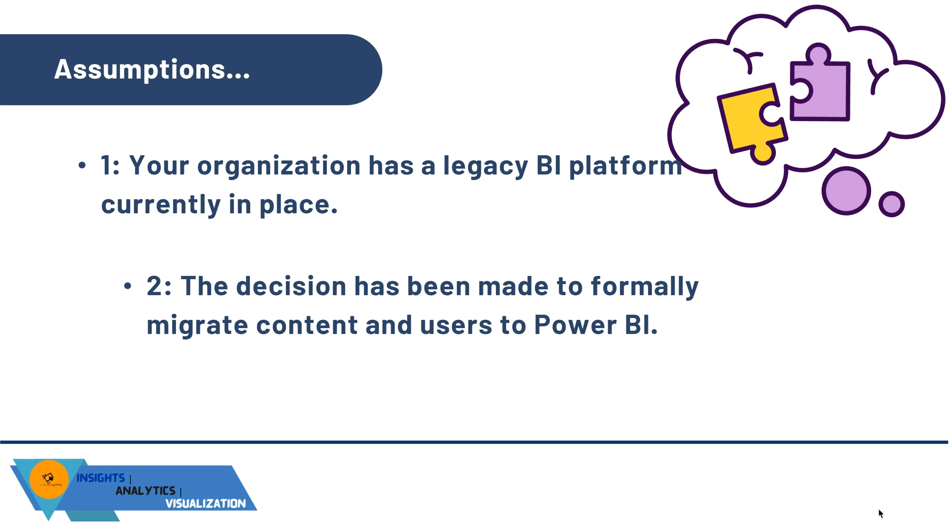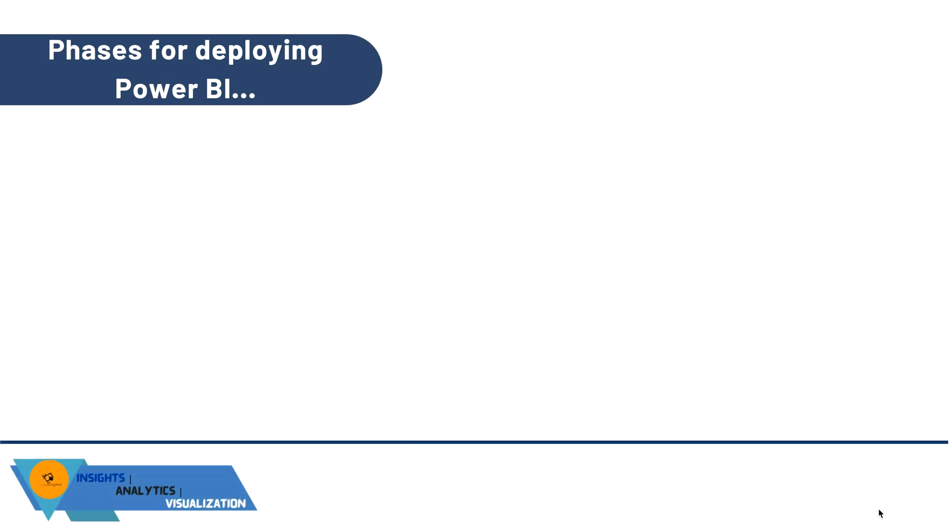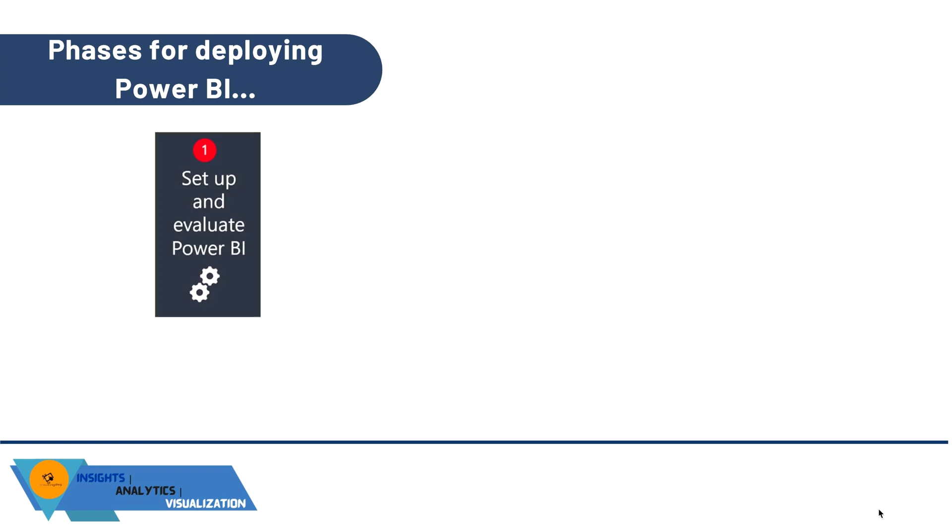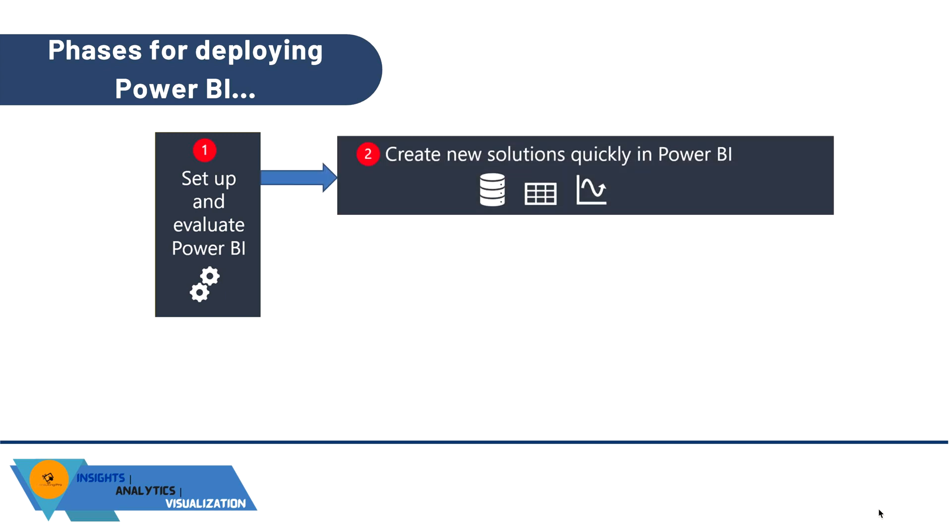Let's look at the high-level phases for deploying Power BI in your organization. Phase 1 is to set up and evaluate Power BI. This involves establishing the initial Power BI architecture — checking your source, destination (Power BI Services), and how you'll perform ETL operations. Preliminary deployment and governance planning are handled here, along with a Power BI evaluation including return on investment and cost-benefit analysis.